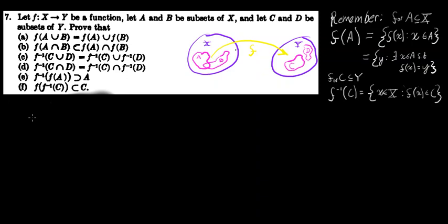We're on to problem 7a in our intro to analysis by Rosenlicht, chapter 1. In this problem, we're showing a set equality using this new function notation. I drew a picture to give us a sense of what the preliminary for 7 is describing. This is the function f that maps elements in x to elements in y. There are two subsets of x, a and b, and two subsets of y, c and d.